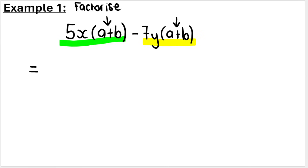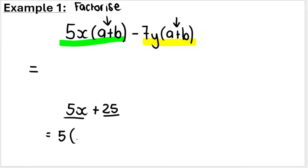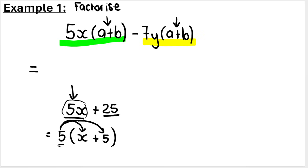Just like when we did highest common factor — to quickly recap, if I had an expression like 5x plus 25, you'd say there are two terms, five can divide into both. You take out your highest common factor, open a leftover bracket, and then 5x divided by 5 leaves you with x, or you ask what must I multiply 5 by to get 5x. And 25 divided by 5 is 5. So we get our highest common factor and our leftover bracket — that's basically what we're going to be doing here.